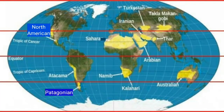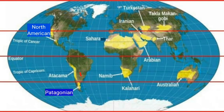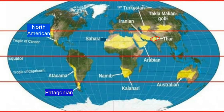Let us see the world's famous deserts on the world map. Sahara Desert in North Africa, Kalahari Desert in South Africa, Atacama Desert and Patagonian Desert in South America, Gobi Desert in Asia, and Arabian Desert and Thar Desert in India.